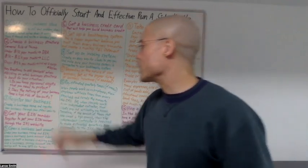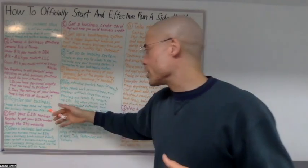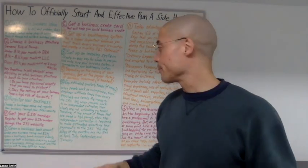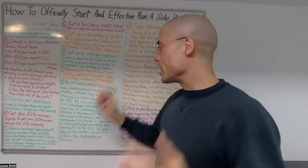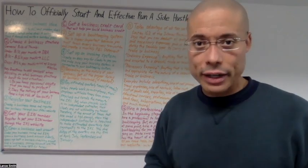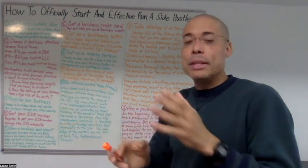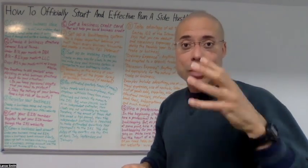Choose a business name and register your business through your state's website. Number four, get your EIN number. Register to get your EIN number through the IRS website. You register your business through the state website, but you get your EIN number through the IRS website.